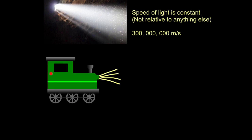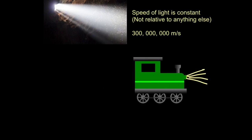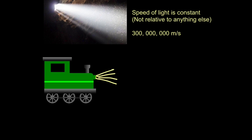Imagine a train is stationary and switches on its headlights — that light will travel at 300 million meters per second. But what if that train was moving at 30 meters per second? Would that give the light an extra push — would it now travel at 300 million and 30 meters per second? The answer is no. We have to accept the speed of light is constant, not relative to anything else — it will still travel at 300 million meters per second. Think about it logically and it won't help you. This is why I find Einstein completely mind-blowing.